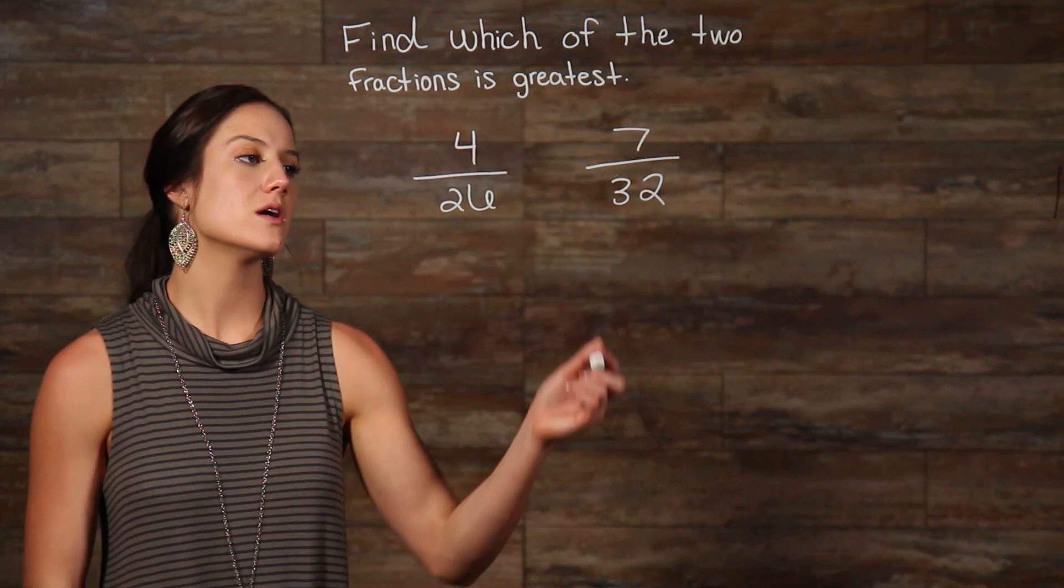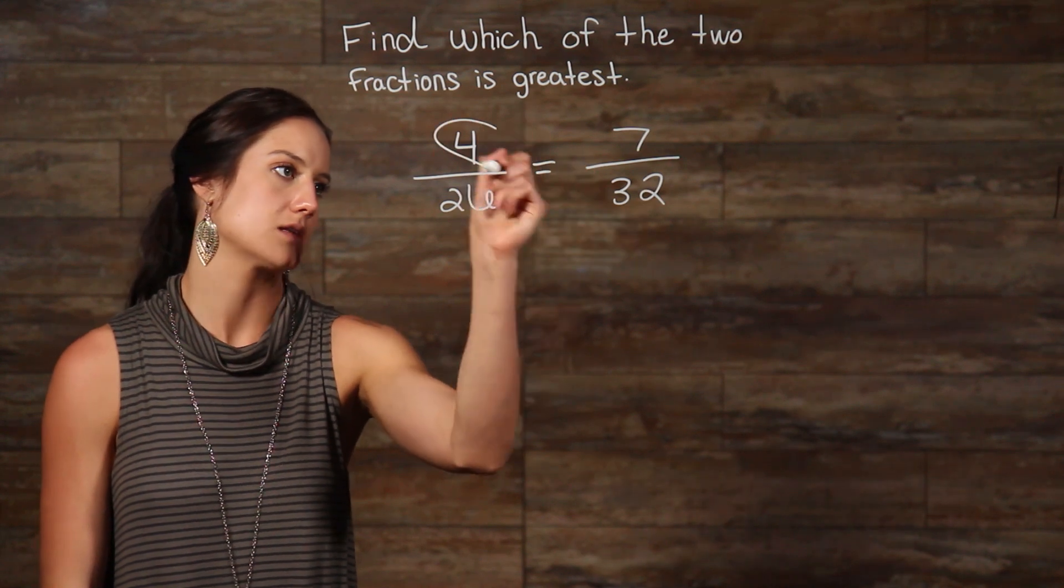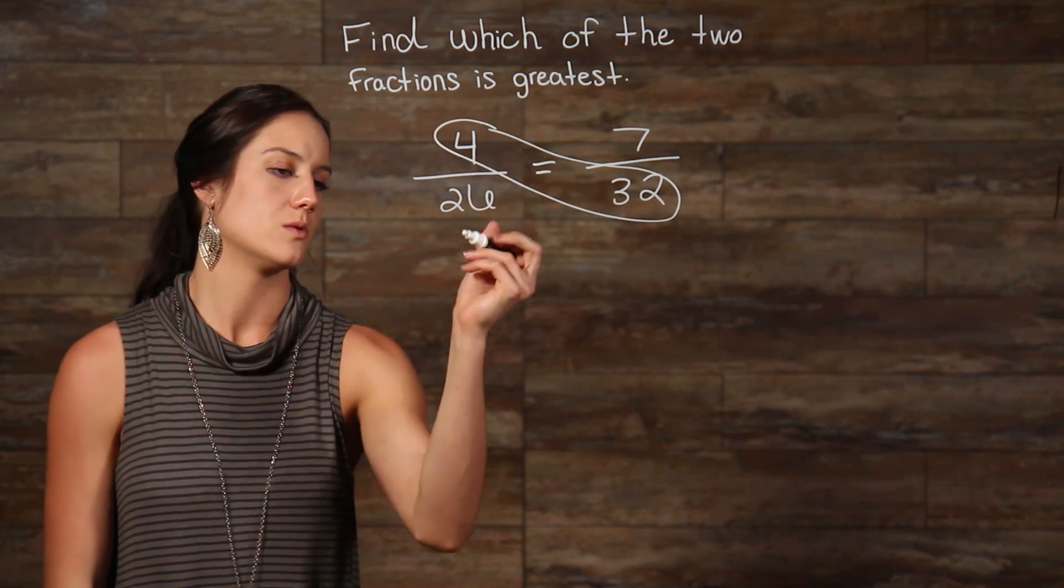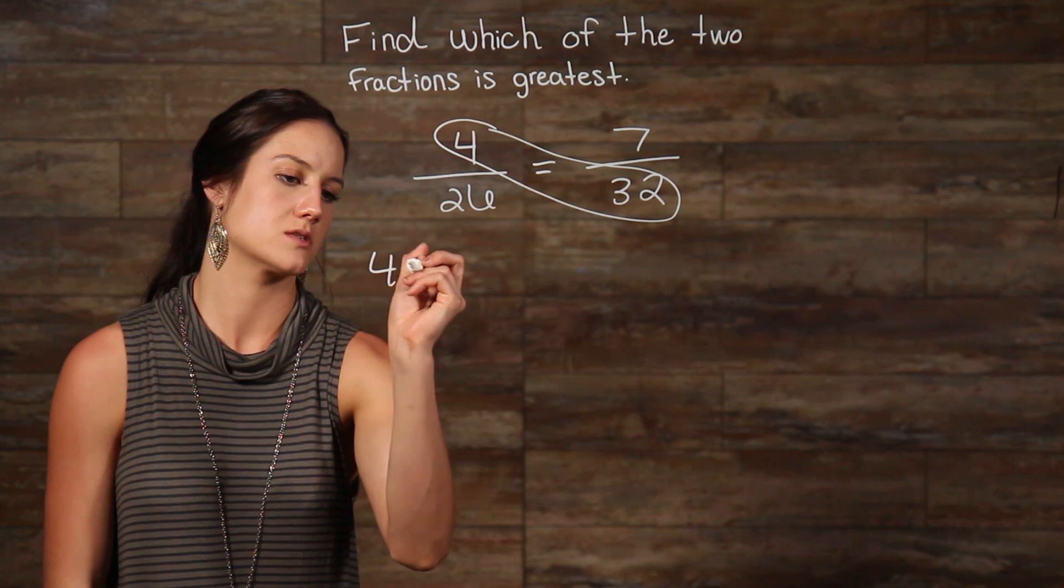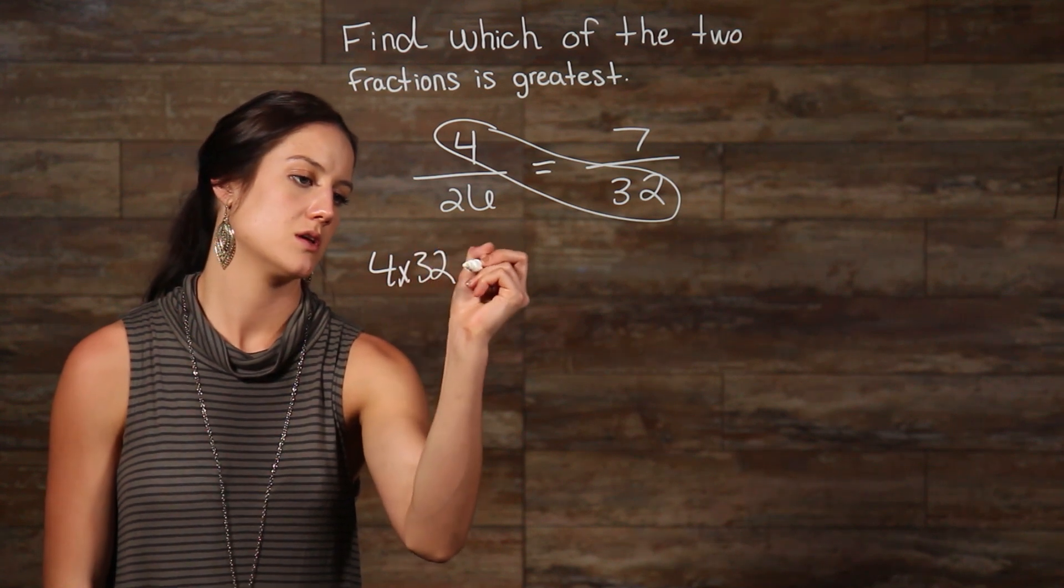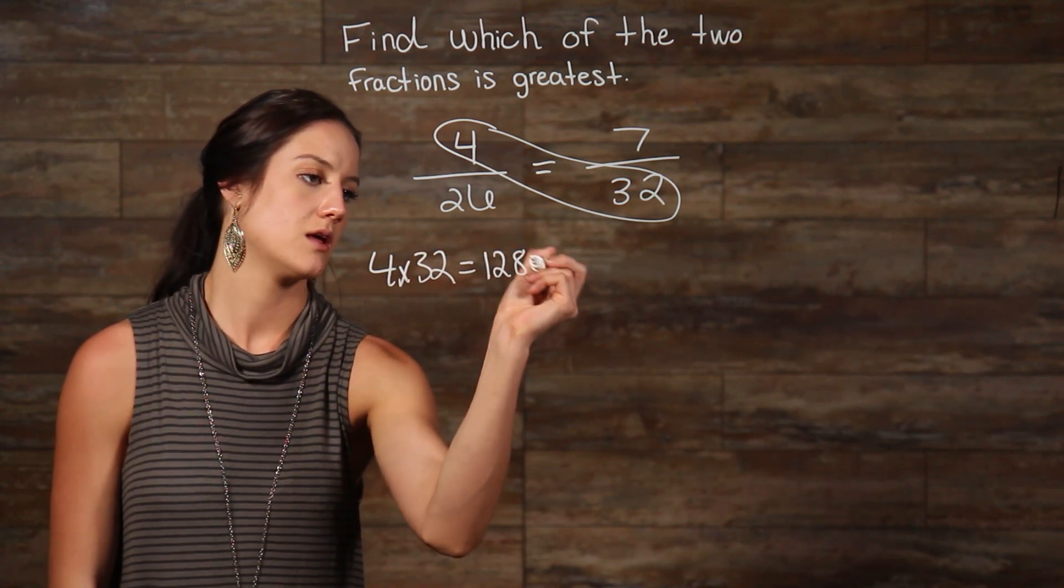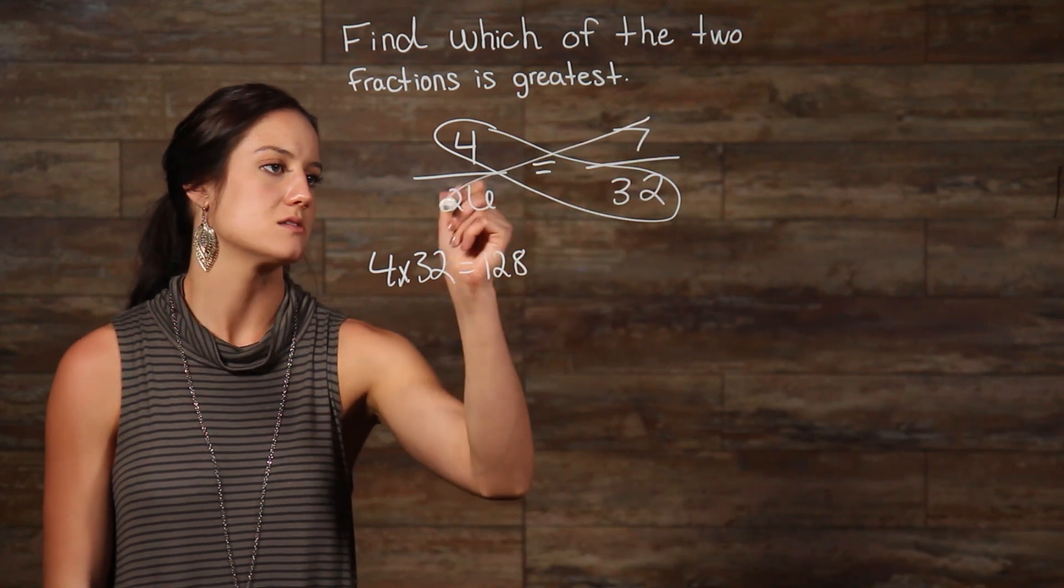So when we cross multiply these two fractions together, we get 128. 4 times 32 is equal to 128, and when we cross multiply these two fractions together, we get 182.